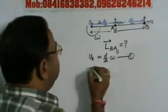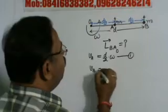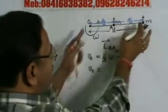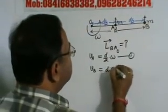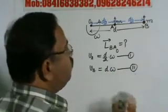Similarly, velocity of B with respect to O, this will be equal to, again, R into omega. R is in this case D, and this is D into omega.